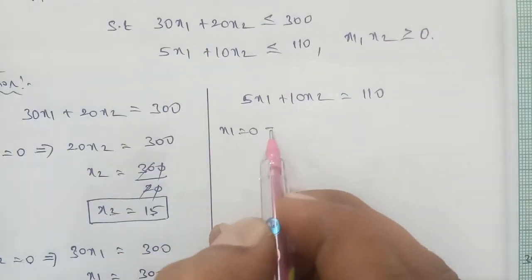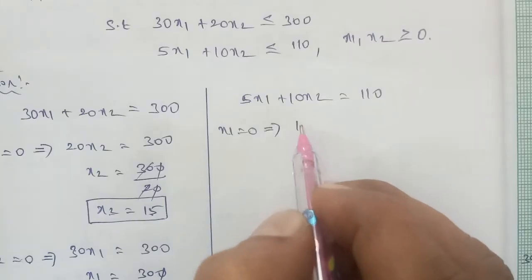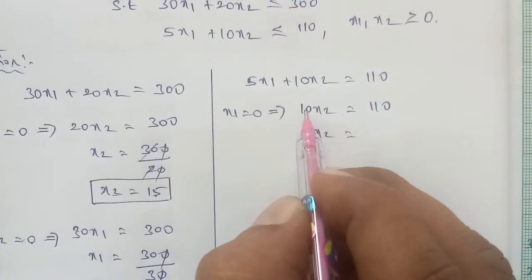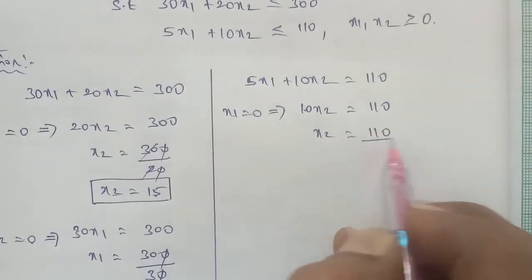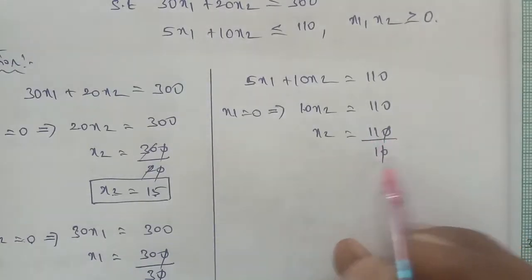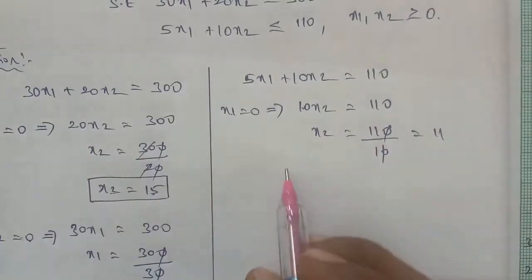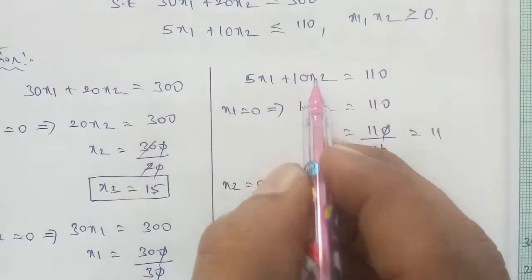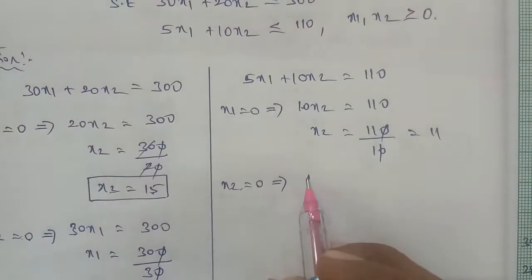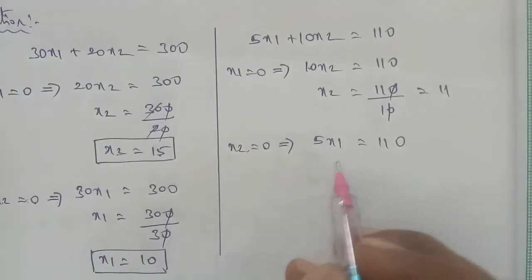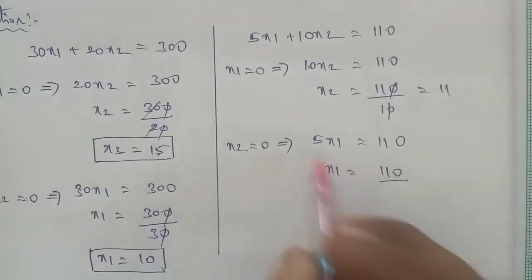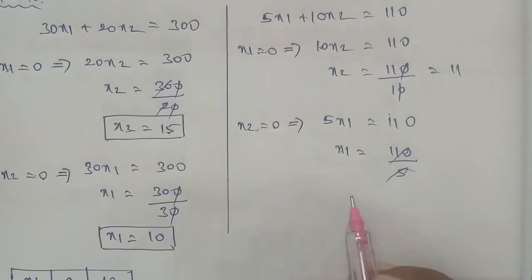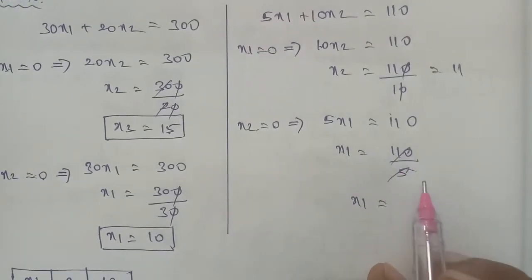For the second constraint: 5x1 plus 10x2 equal to 110. If x1 is equal to 0, then 10x2 equals 110, so x2 is equal to 11. If x2 is equal to 0, then 5x1 equal to 110, so x1 is equal to 110 divided by 5, which equals 22.